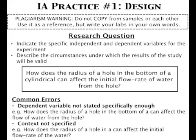It's important that you specifically state both the independent and dependent variables in your research question and that you specify the context of the experiment. An example research question for this prompt would be: how does the radius of a hole in the bottom of a cylindrical can affect the initial flow rate of water from the hole? It was important to specify 'initial' because the flow slows as the water escapes, and 'cylindrical' because the shape will affect the rate of flow.